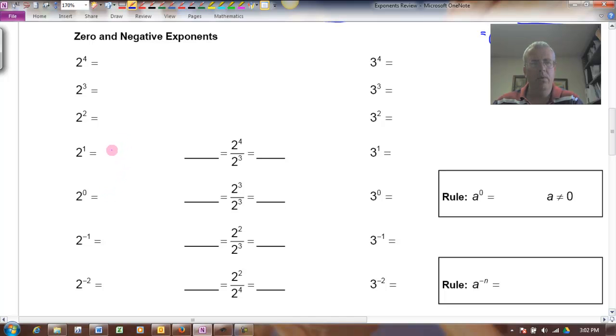One thing we could do to try and think what 2 to the zero might be is notice that 2 to the first power is 2, and 2 squared is 4, and 2 cubed is 8, and 2 to the fourth is 16. And if I look at this in reverse, you'll notice a nice pattern.